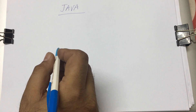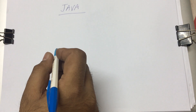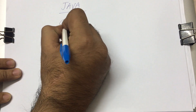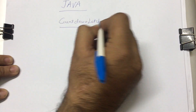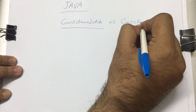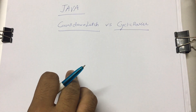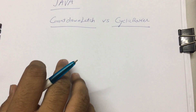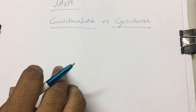In Java 1.5, multiple constructs came in for concurrent programming. Today we are going to discuss the differences between CountDownLatch versus CyclicBarrier. People often get confused about where to use which construct, so we'll start with CountDownLatch.